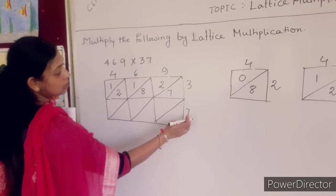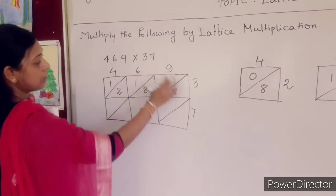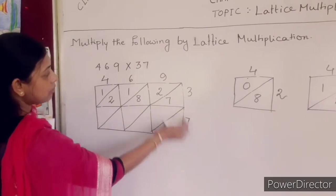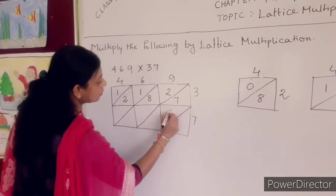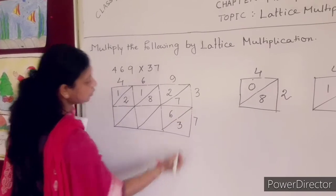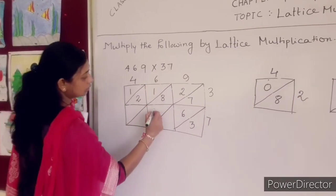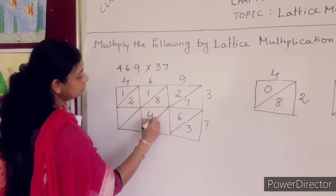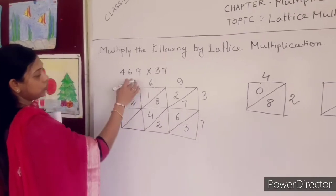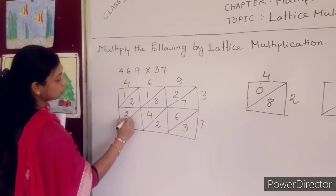Now 7. You have to multiply 469 with 7. 7 into 9 is 63. 7 into 6 is 42. 7 into 4 is 28.